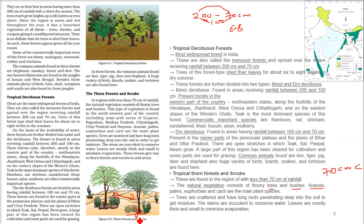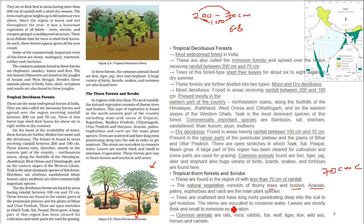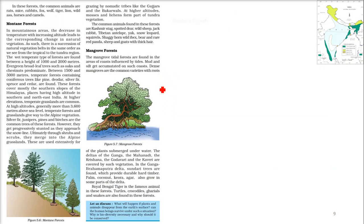Roots penetrate deep into the soil searching for water and moisture. The stems are quite succulent to conserve water. Leaves are mostly thick and small to minimize evaporation. Common animals found here are rats, mice, rabbits, fox, wolf, tiger, lion, wild ass, horses, and camels.